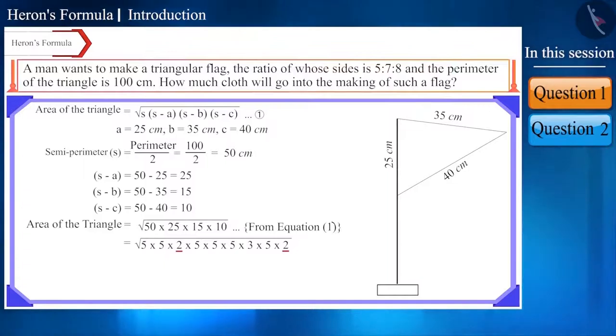Now, friends, here the number 5 occurs 6 times and the number 2 occurs 2 times. By taking these numbers out of the square root, we will write the number 5 three times and the number 2 once and we will write the number 3 within square root. In this way, we will get our answer.